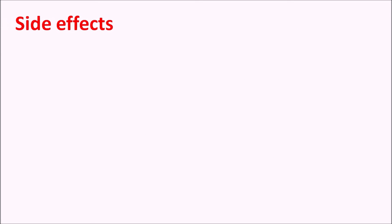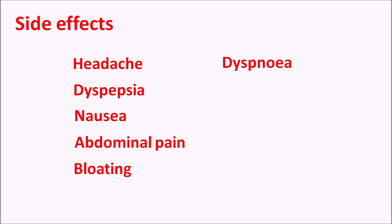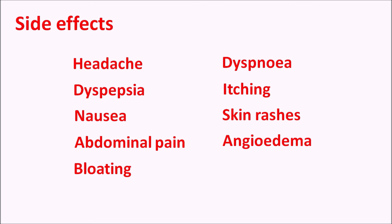What are the side effects? The important side effects of betahistine mainly include headache, gastrointestinal side effects such as dyspepsia, nausea, abdominal pain, and bloating. Dyspnea — difficulty in breathing — can also be observed. Some skin reactions such as itching and skin rashes can be observed, and hypersensitivity reactions such as angioedema and urticaria can also be produced. Since betahistine is a histamine analog, it can increase the allergic response, leading to itching and skin rashes.